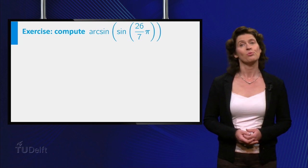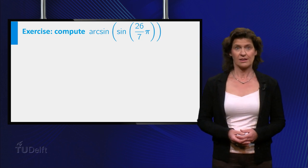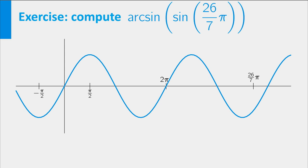Next, compute the arcsine of the sine of 26 pi over 7. Now an easy but wrong answer would be 26 over 7 pi. Why? Well, because this angle is not in the domain of the function arcsine of x.